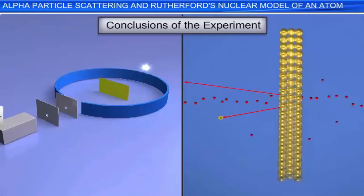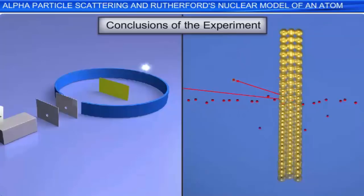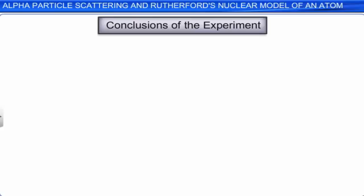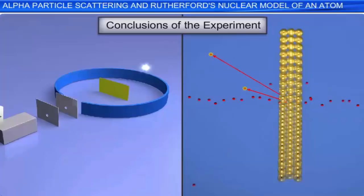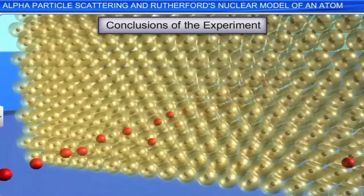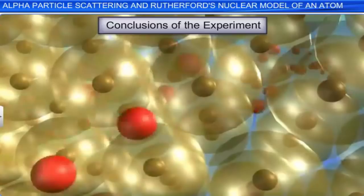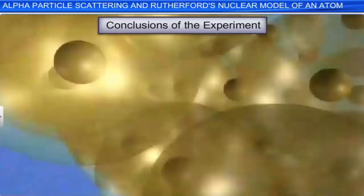For this to have happened, such alpha particles must have experienced a large repulsive force. This would be possible only if most of the atom was empty, and its entire positive charge was concentrated tightly at the central part called the nucleus. In such a case, the alpha particles which moved very close to the central part would experience large repulsive forces and suffer deflections greater than 90 degrees.